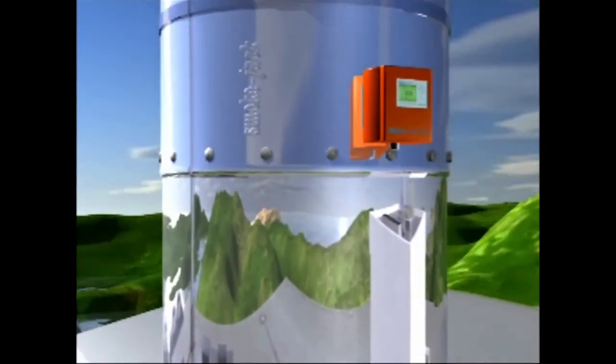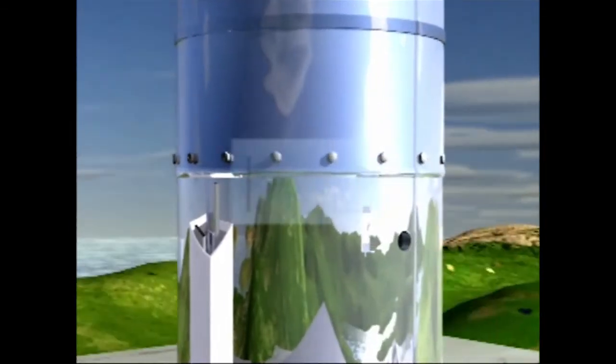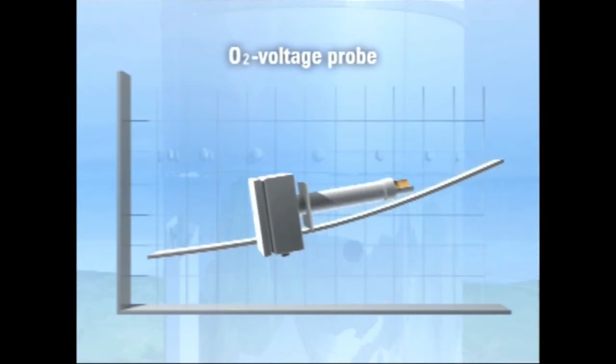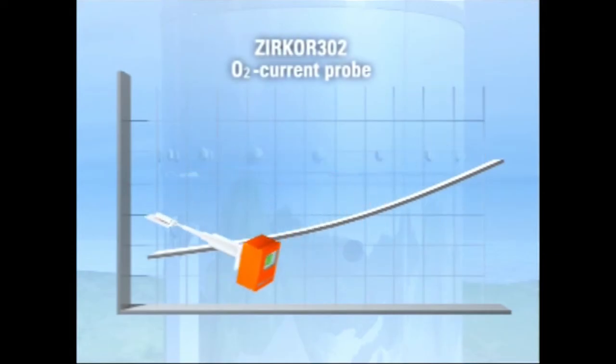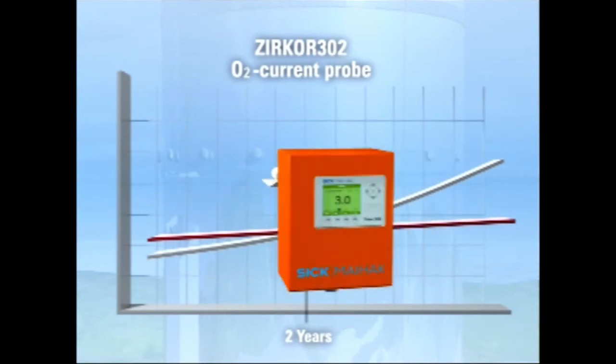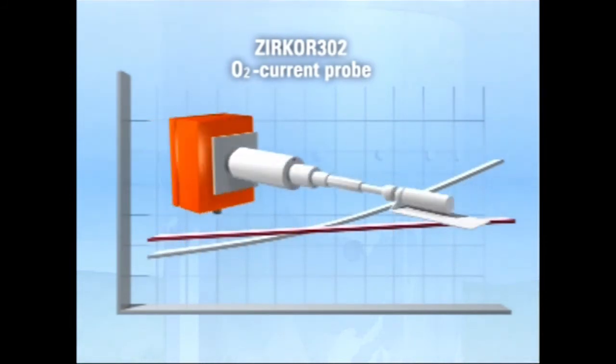In comparison, the purchase price for the Circor 302 may be a little higher due to the integrated fully automatic calibration functions. But this is more than compensated for by the elimination of additional test gases and the resulting reduction in operational as well as maintenance costs.